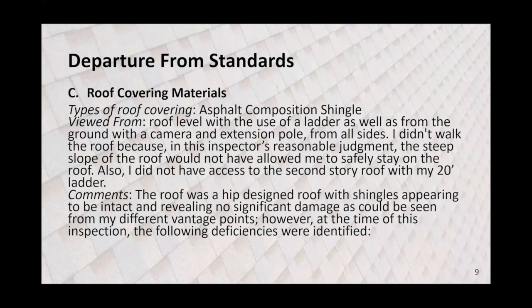Here's the departure from standard — this is section C of our TREC report, roof covering materials. We have to tell what kind of roof covering and from where we viewed the roof. This is where you would tell if you deviate or depart from what the standard says we have to do. For example: types of roof covering — asphalt composition shingle.